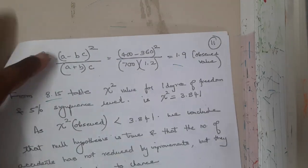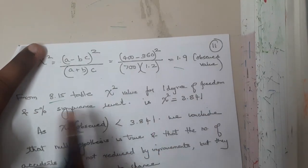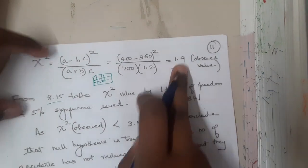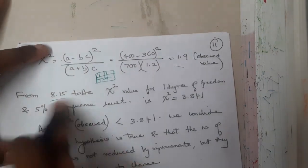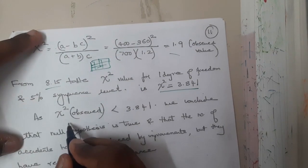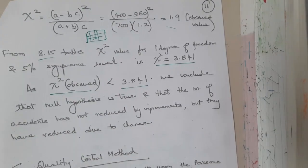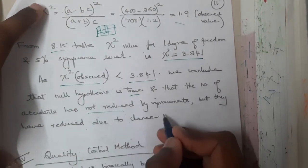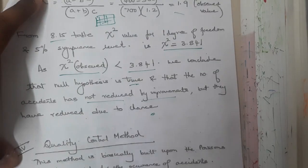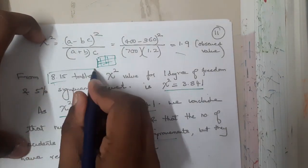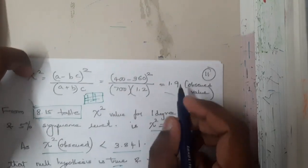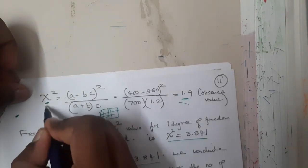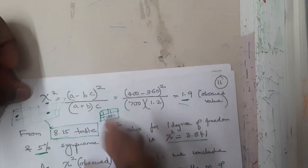From table 8.5, the chi-square value for one degree of freedom at 5 percent significance is 3.84. Our observed value of 1.9 is less than 3.84, so we conclude the null hypothesis is true — the number of accidents has not significantly changed due to improvement. In examinations, this table should be provided, listing chi-square values against percentage significance levels, similar to a logarithmic table.